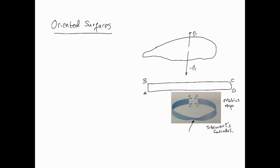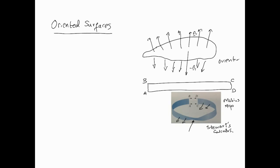On a regular surface all the normals point outwards on one side and in the opposite direction on the other side. But on the Möbius strip that doesn't happen. If these normals are inwards here, they become outward as you continue around — so there is a strange behavior. Therefore the Möbius strip is not an oriented surface.